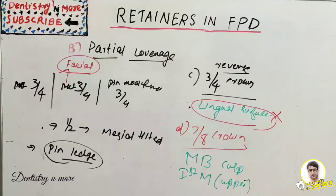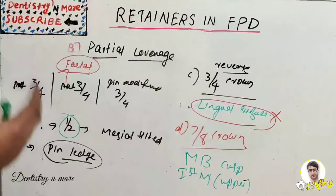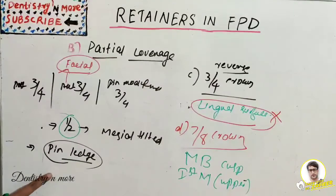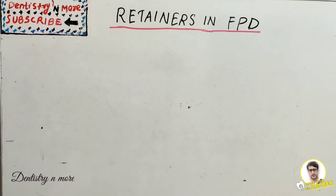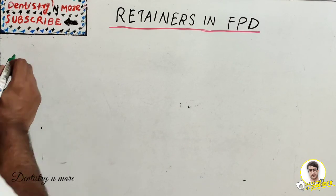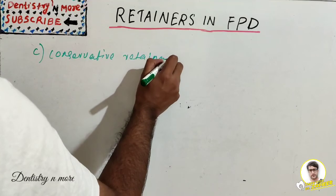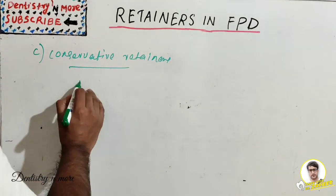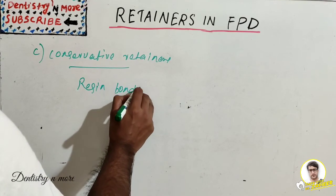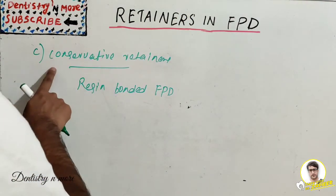To summarize partial coverage retainers: we covered the three-quarter crown, half crown, pin ledge, three-quarter reversed crown, and seven-by-eight crown. Moving to conservative retainers — these require minimal tooth reduction and are usually resin-bonded FPDs. A separate lecture video on resin-bonded FPD has been uploaded and covers this type of conservative retainer in detail.